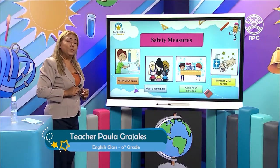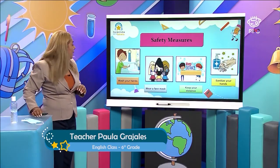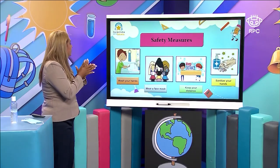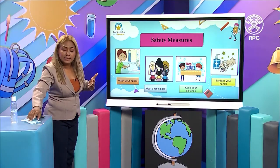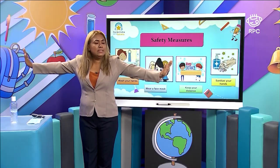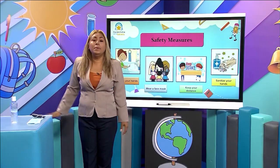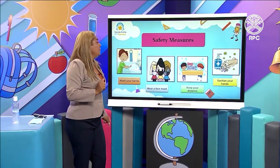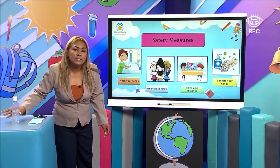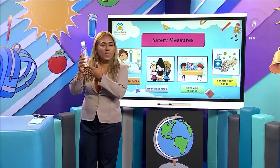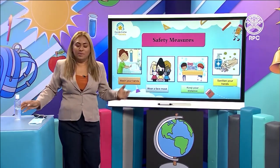Today let's talk about safety rules. Just to remember that you need to wash your hands. You need to wear a face mask. Remember, you need to keep your distance. What is the distance that you need to keep? The distance is two meters. You also need to sanitize your hands. You need alcohol, and that's all you have to do.